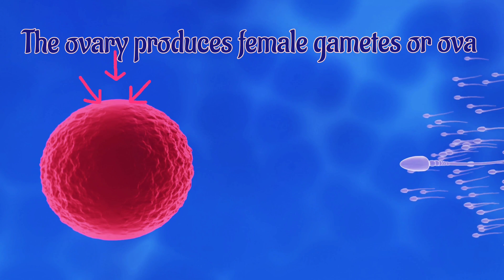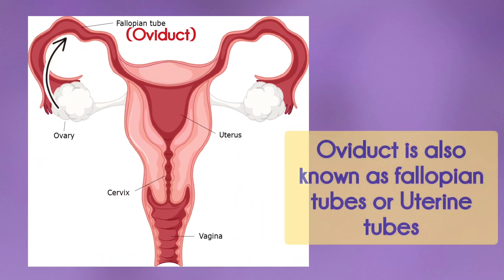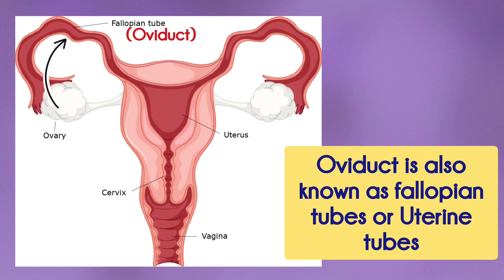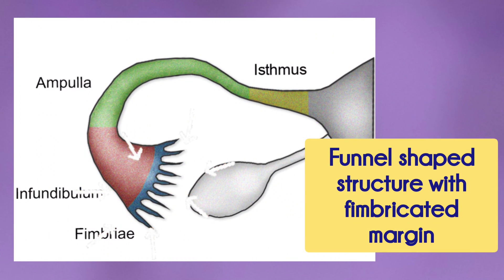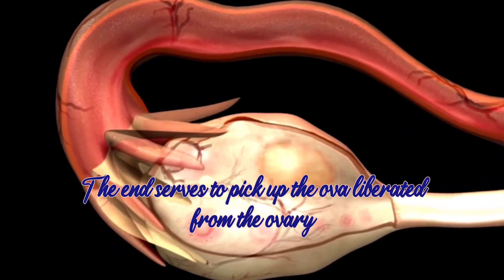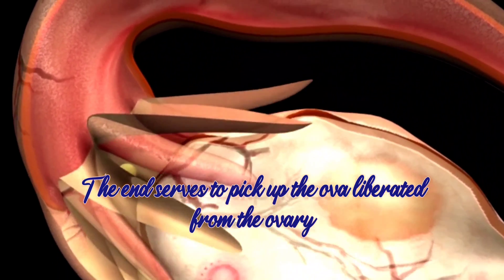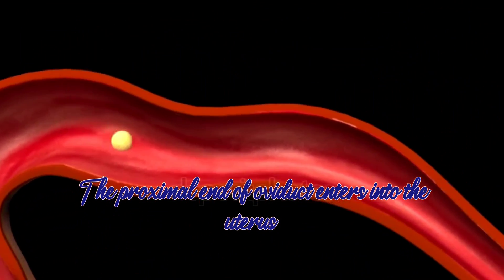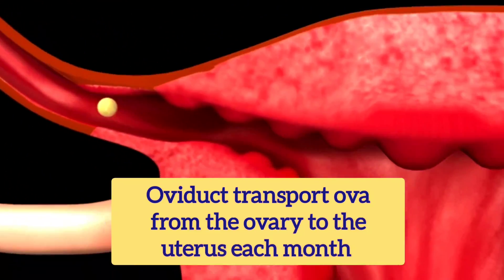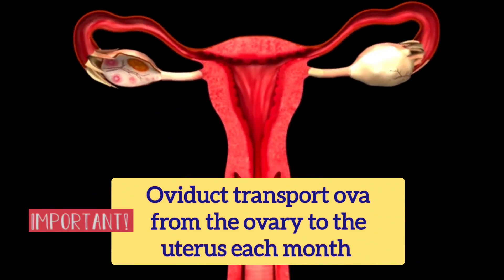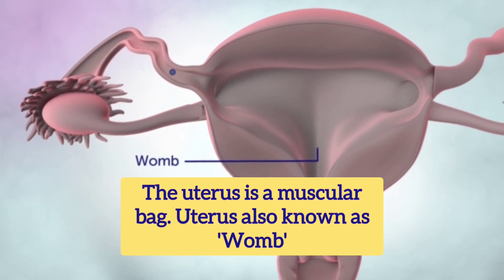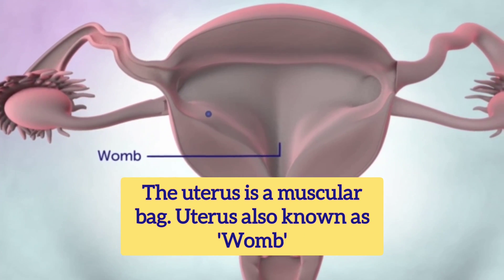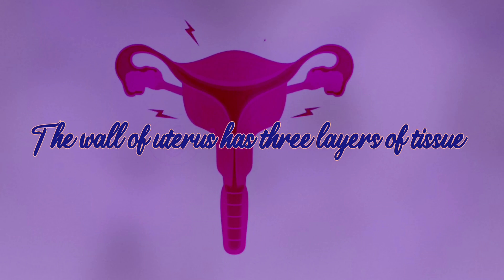The ovary produces female gametes or ova. In close relation to the ovary, the oviduct is present. It is a funnel-shaped structure usually with fimbricated margins. The end serves to pick up the ova liberated from the ovary. The proximal end of the oviduct enters into the uterus.